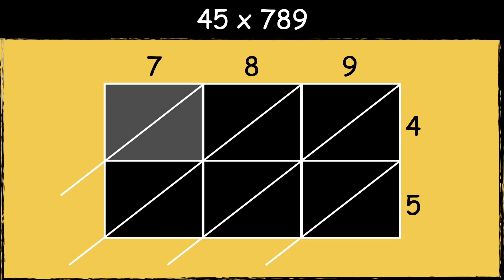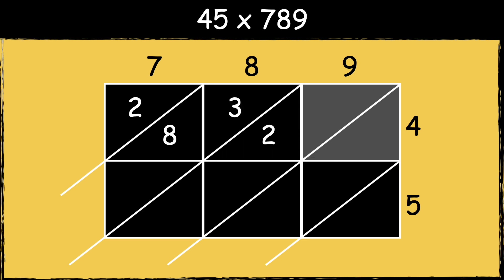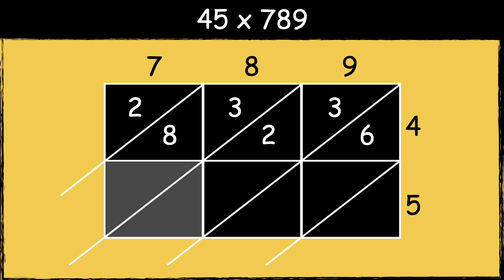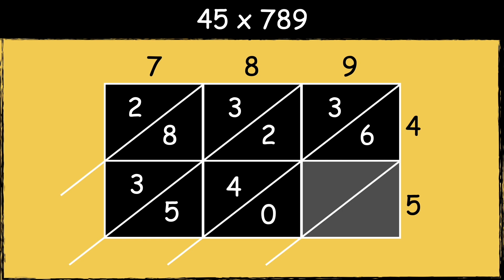Now we are ready to multiply. 7 times 4 is 28. 8 times 4 is 32. 9 times 4 is 36. Then we do 7 times 5 which is 35. 8 times 5 is 40. And 9 times 5 is 45.